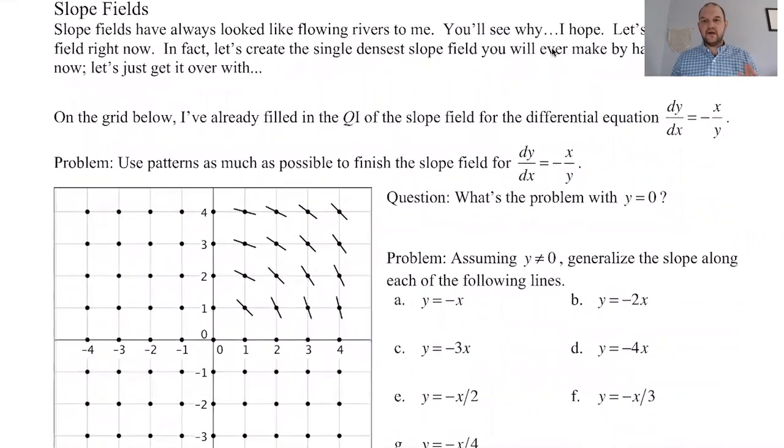We're gonna make the worst one that you will ever probably make by hand. So our differential equation that we're dealing with is dy/dx equals negative x over y. A differential equation just means it's an equation that has a derivative in it. This one's kind of implicit because there's an x and a y.